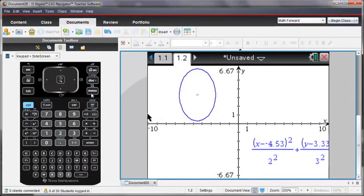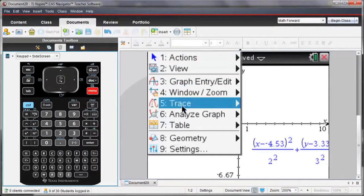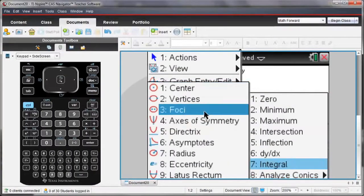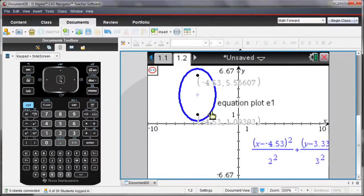I can also analyze properties of this ellipse by selecting menu and analyzing the conics. I'm going to find the foci. I select the ellipse, and the values of the foci appear on the screen.